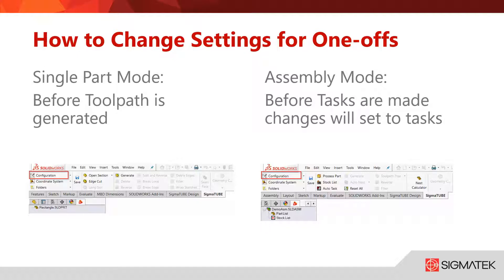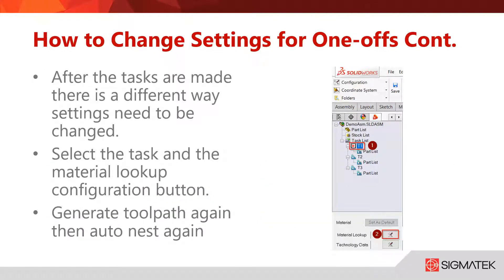But don't worry if you want to make a change at the task level we can do that too. In assembly mode after hitting auto task with your tasks created you can make a change to your settings. Say you wanted to change the lead ins of task 1 or T1's parts. You can simply click on your T1 task and then the configuration symbol, which is a wrench and a screwdriver, in order to make changes to this task only. Once you make a change you can then generate toolpath and auto nest as normal. If you find you are making a lot of changes at the task level consider using material lookup keys to save your settings.